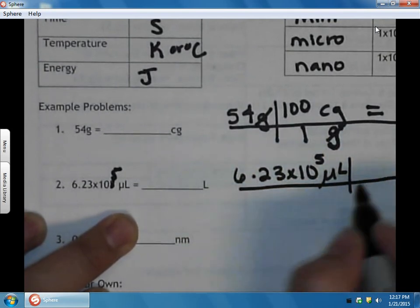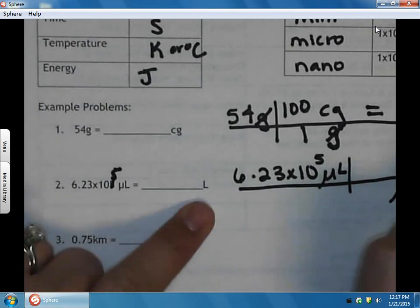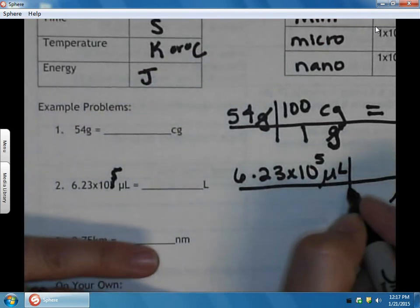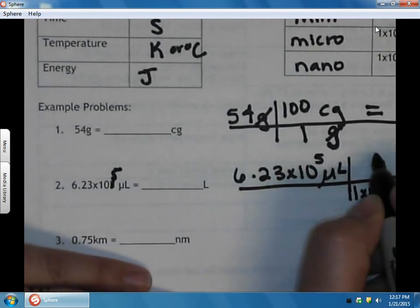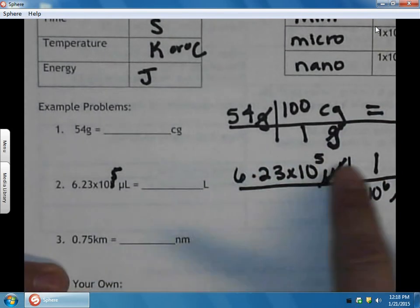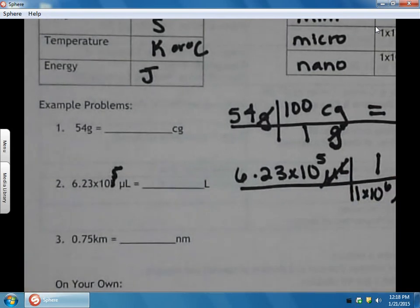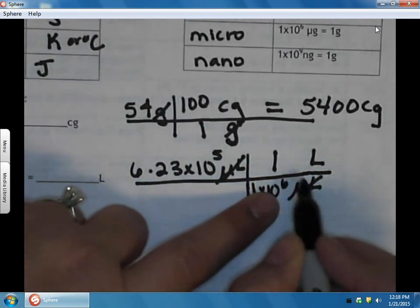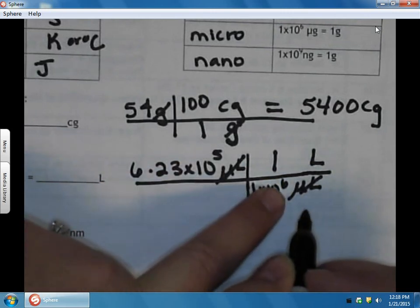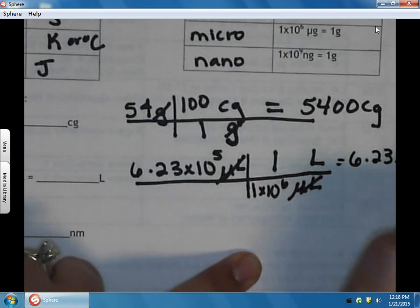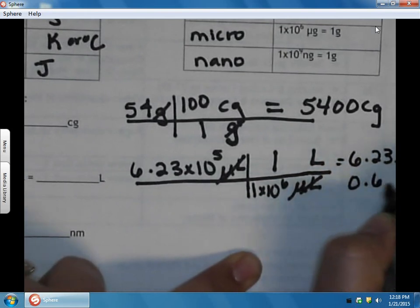Again, the unit we no longer want goes on the bottom so it cancels. The unit we do want goes on the top. We just learned that micro is 1×10^6, so we put 1×10^6 microliters equal to 1 liter, and our microliters unit cancels out. We multiply things on the top and divide by things on the bottom. When we divide by the bottom, if you remember your exponent rules, 5 minus 6 since we're dividing gives us 6.23×10^-1 liters, or not in scientific notation, 0.623 liters.